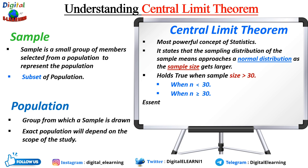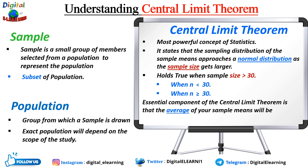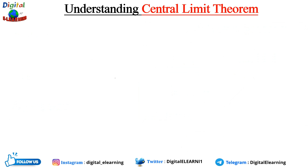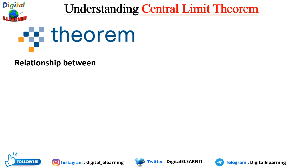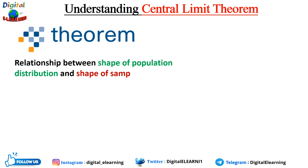An essential component of central limit theorem is that the average of your sample means will equal the population mean. In other words, add up the means of all your samples, find the average, and that average will be your actual population mean. Similarly, if you find the average of all the standard deviations in your samples, you will find the actual standard deviation for your population.